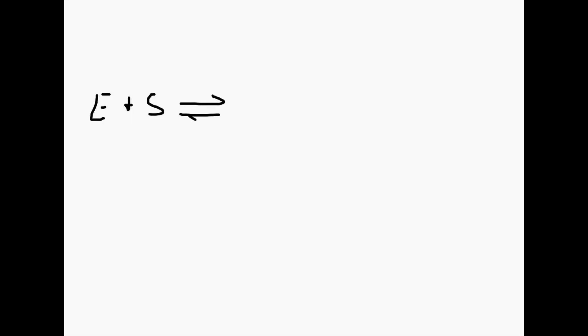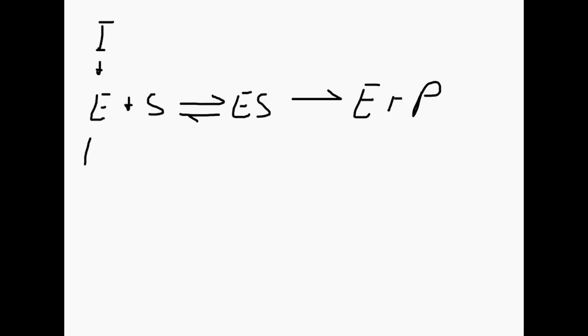We know that a competitive inhibitor can only interact with the free enzyme. So if we've got our scheme here — enzyme plus substrate gives us an enzyme-substrate complex, and that gives us enzyme plus product — the inhibitor can only interact with this free enzyme here. So here we would have the inhibitor, and this forms a reversible enzyme-inhibitor complex.